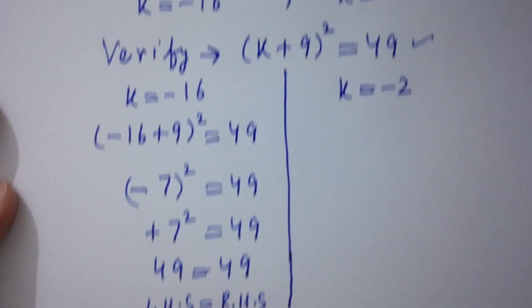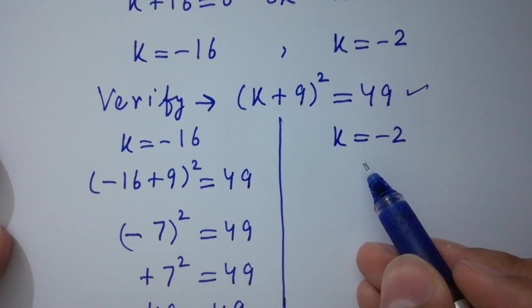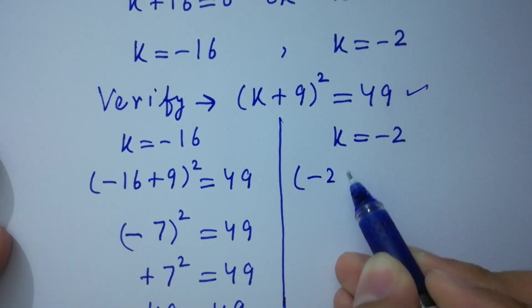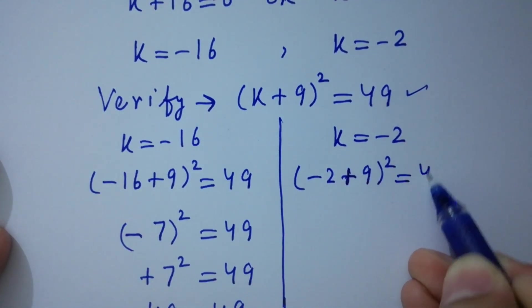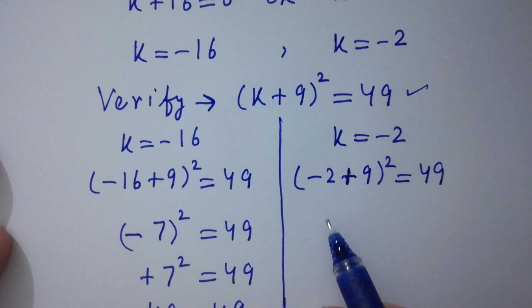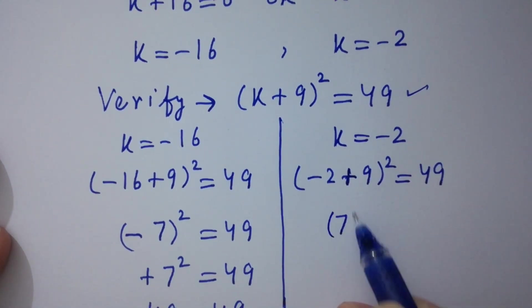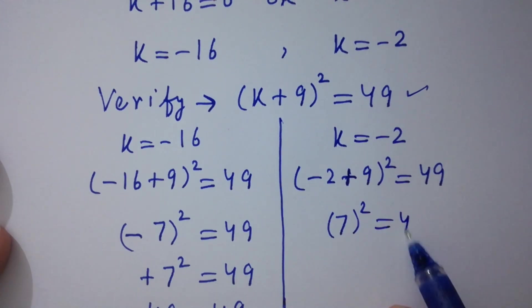And here, if we put k = -2 into this, we have here (-2 + 9)² = 49. We have here plus value of 9 - 2, we have 7² = 49. 7 times 7 is 49 equal to 49.